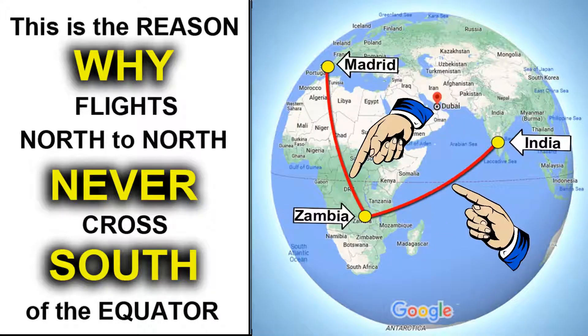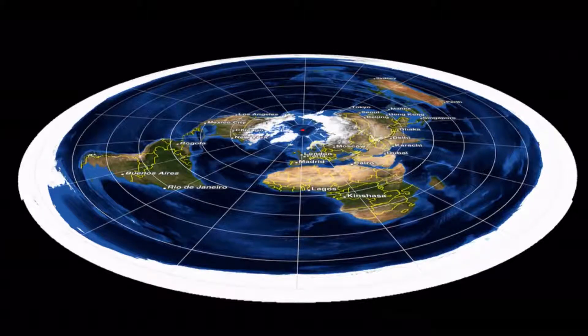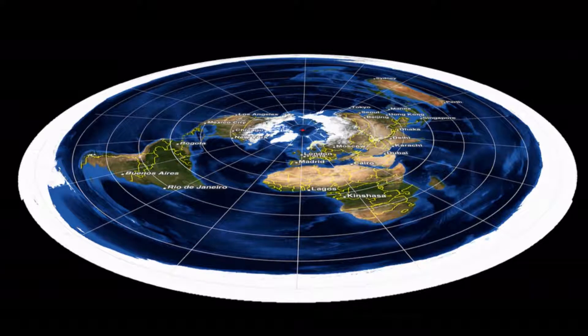Another example: a flight from Europe — in this case Madrid — going to India with a stopover south of the equator in Africa, for example Zambia or anywhere. You will never see this, and that's because Earth is not a ball. This is the true shape of the Earth. We live on a flat plane, with the continents close together in the middle, and the oceans and the Antarctic Circle holding up the water.